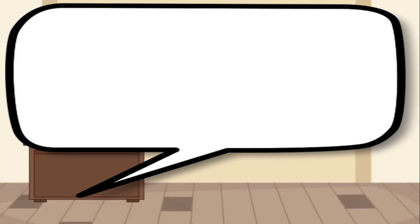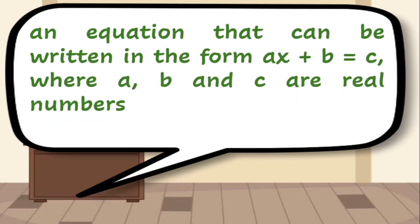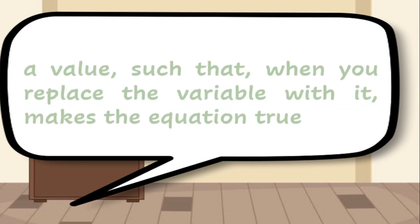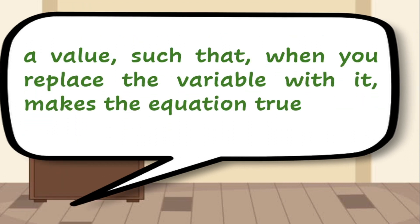Number 2: it is an equation that can be written in the form ax plus b equals c, where a, b, and c are real numbers and a must not be equal to 0. The correct answer is a linear equation. Number 3: it is a value such that when you replace the variable with it, makes the equation true. This is what we call a solution.